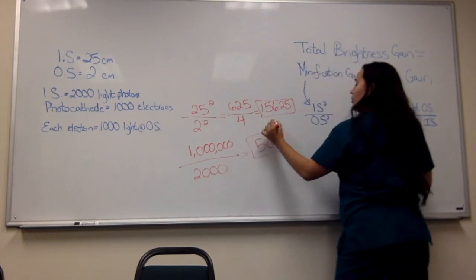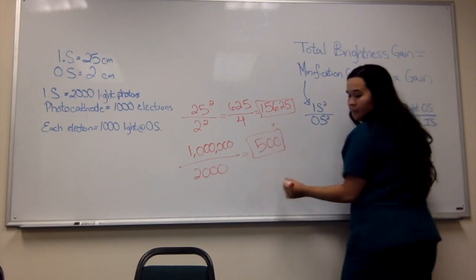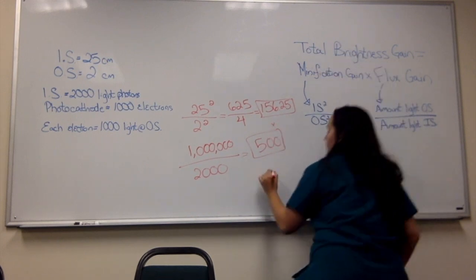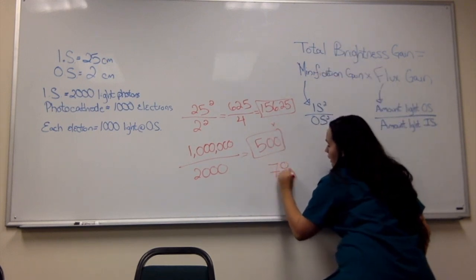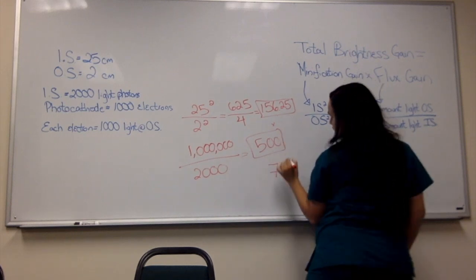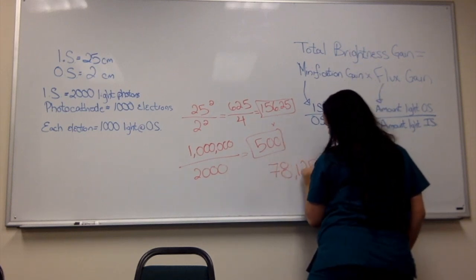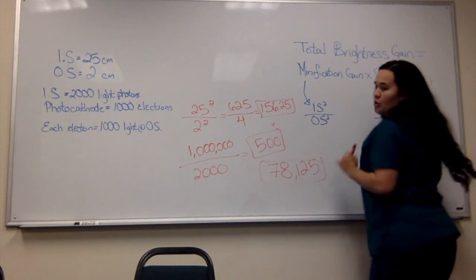Then I'm going to multiply these two numbers to get the total brightness gain, and it's going to give me 78,125 total brightness gain.